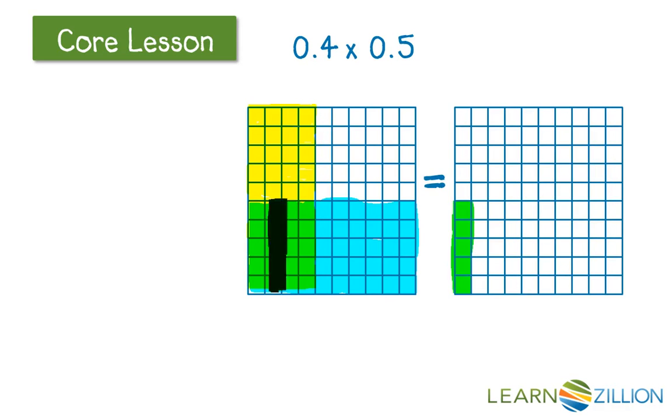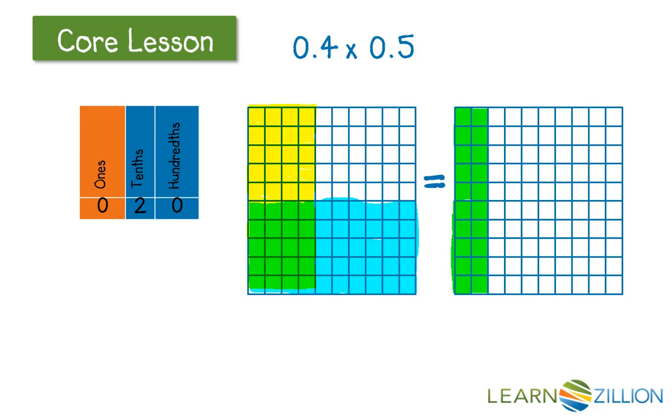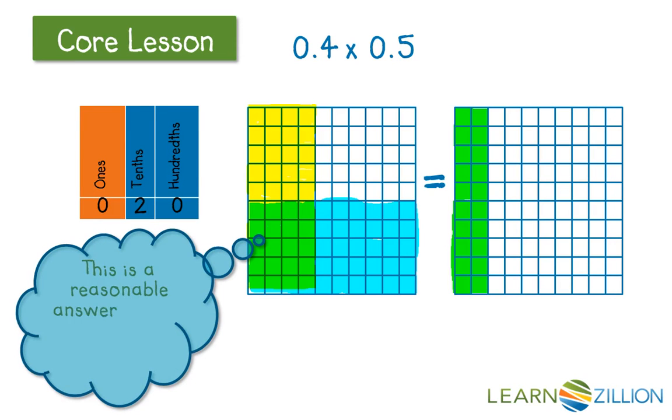Let's combine each of these pieces so we can see what they actually make. So 4 tenths of 5 tenths is 2 tenths, or 20 hundredths. This is a reasonable answer since it matches my smart estimate of 20 hundredths.